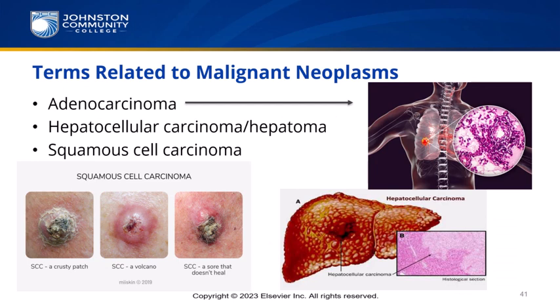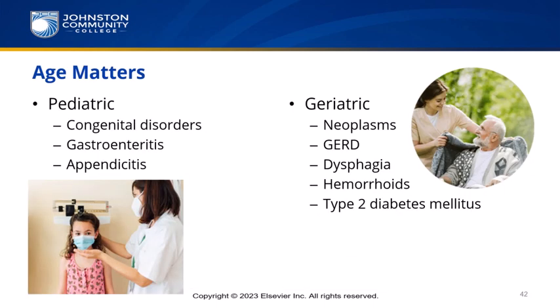Terms related to malignant neoplasms: Adenocarcinoma is a malignant tumor of epithelial origin that originates from or has the appearance of glandular tissue. Hepatocellular carcinoma — also called hepatoma — is a malignant epithelial tumor originating in liver cells. Squamous cell carcinoma is any cancer of epithelial origin with a scale-like appearance. Regarding age differences: pediatric patients more commonly present with gastroenteritis and appendicitis, while geriatric patients more commonly see neoplasms, GERD, dysphagia, hemorrhoids, and type 2 diabetes mellitus.